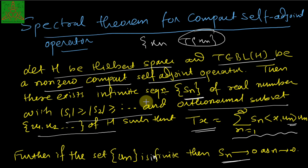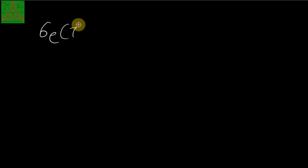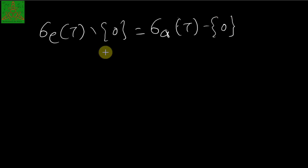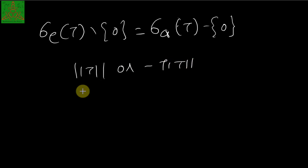That's it for this video. We discussed the spectrum of the compact operator, which tells you that the nonzero eigenvalues are the same as nonzero approximate eigenvalues. We proved that ‖T‖ or −‖T‖ are eigenvalues of a compact self-adjoint operator, and we stated the spectral theorem for compact self-adjoint operators. Thank you very much. If you like this video, please press the like button and subscribe. See you in the next video, bye bye.